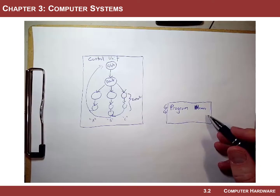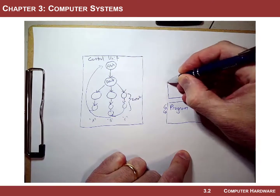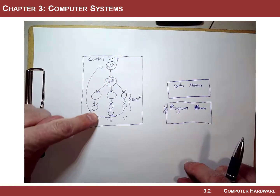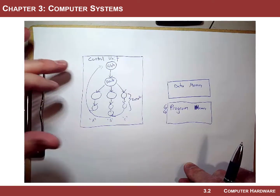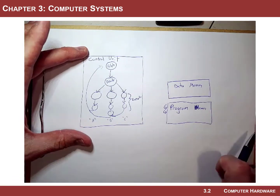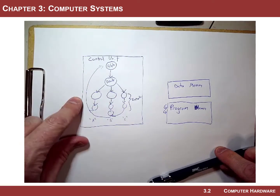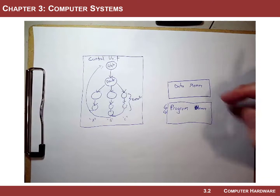So we have our control unit and our program memory. In addition to that, we also need memory for interim storage — what we call data memory. Data memory is essentially RAM, and it represents places that you can temporarily store information. For example, if you're adding a 256-bit number but your hardware only has a 16-bit adder, you have to add it word by word, and you can store those interim sums in data memory. You use data memory all the time to hold variables that change in real time.